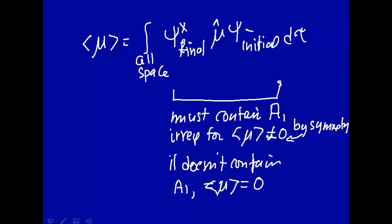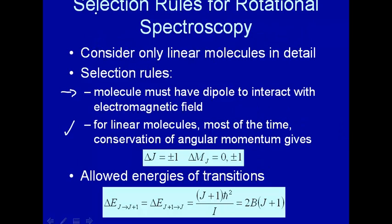So it's by symmetry — the transition dipole moment could be zero, for example if the J quantum number changes by more than one. Those are three considerations to determine whether you have a transition: the molecule must have a dipole moment, the quantum number changes must satisfy ΔJ = ±1, and the transition dipole moment by symmetry should not equal zero.